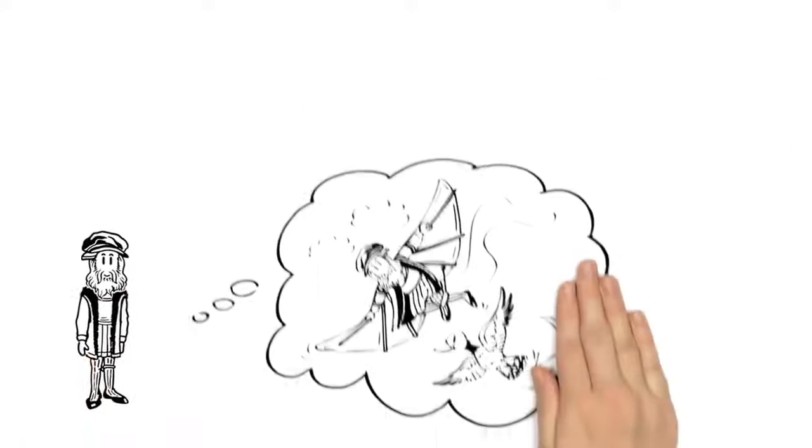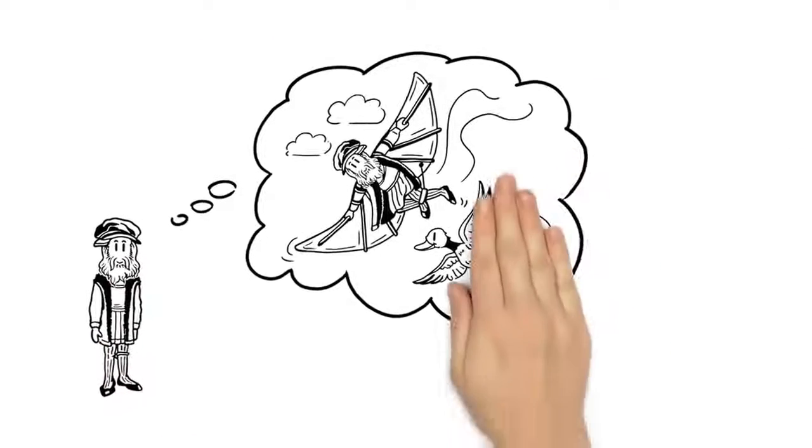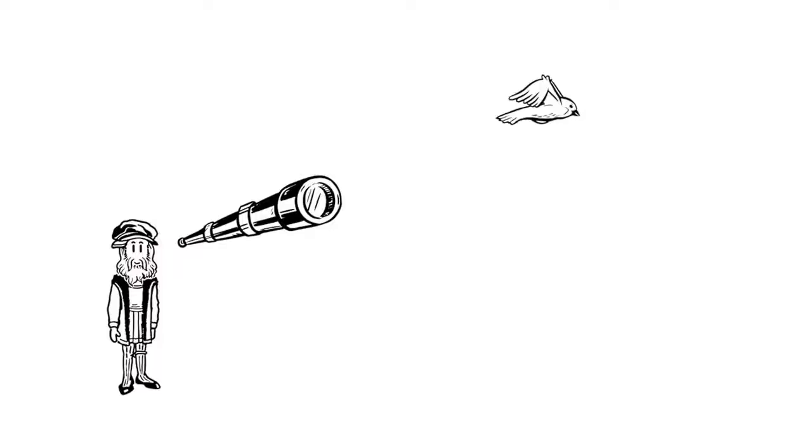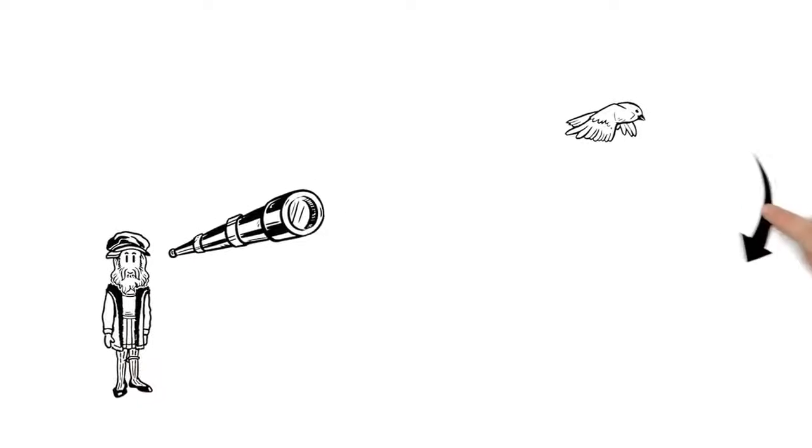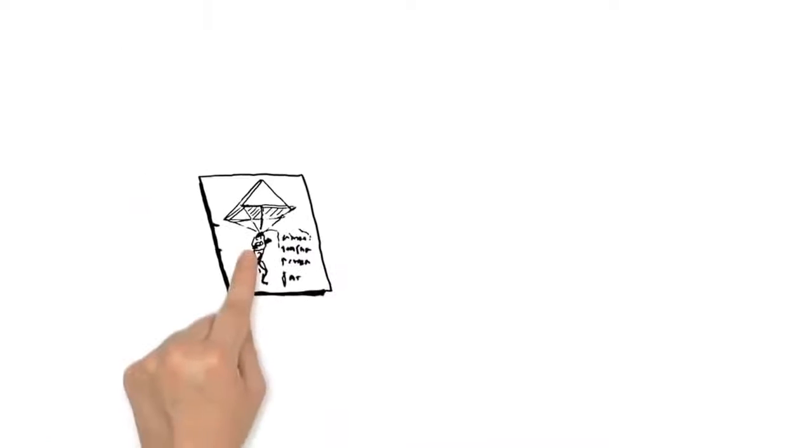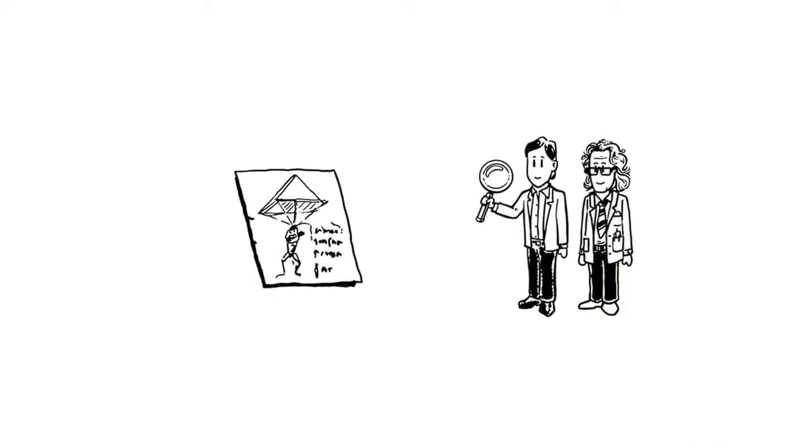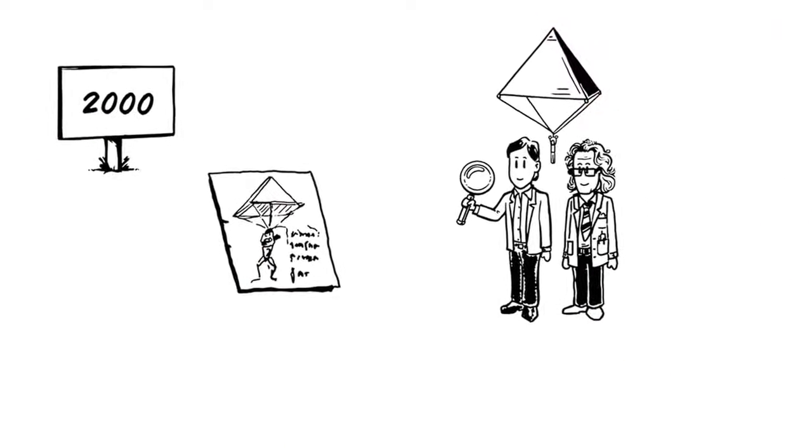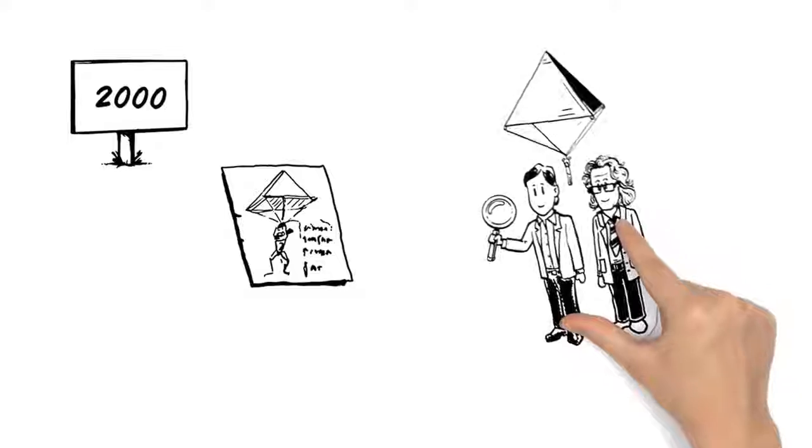One of Leonardo's greatest dreams was to fly. By observing the movements of birds, he invented the very first flying machines. A parachute was later assembled by scientists in the year 2000 using his original design. And it worked.